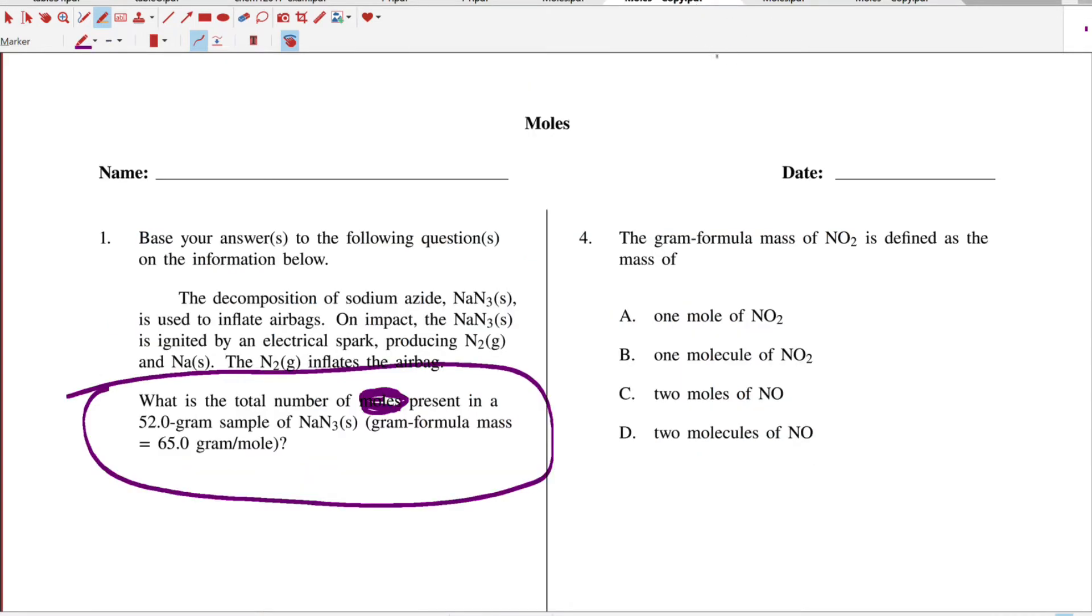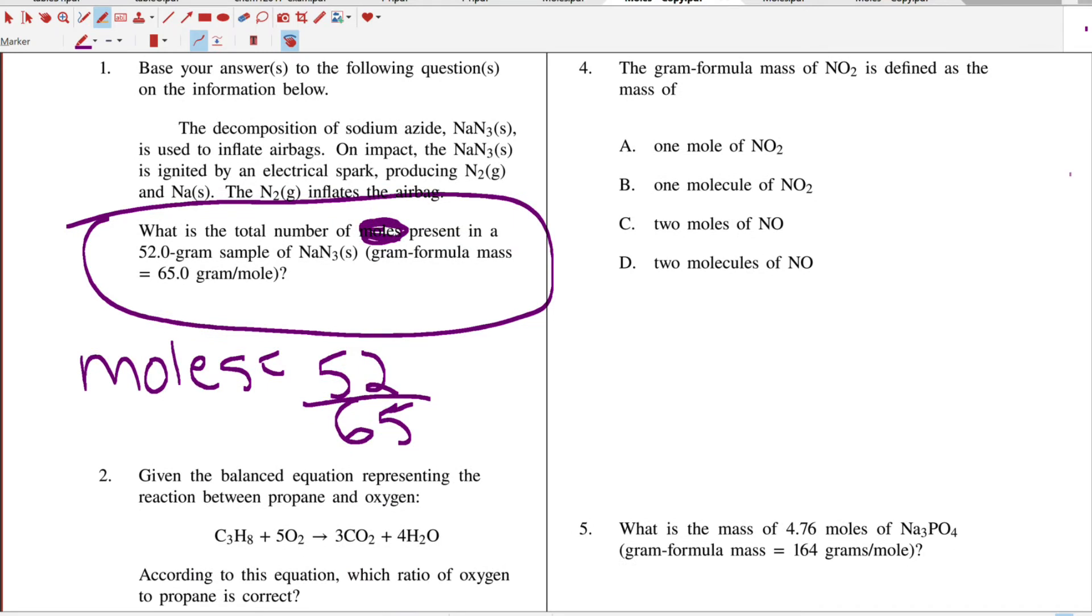So here moles equals given mass, which is 52, and they gave you the gram formula mass in parentheses, so that would be the answer. You would just do 52 divided by 65 and write that answer down. I just have to get a calculator. If it said show the setup we would be done, but it actually wants the value and it doesn't say anything about significant figures. The answer is 0.8.